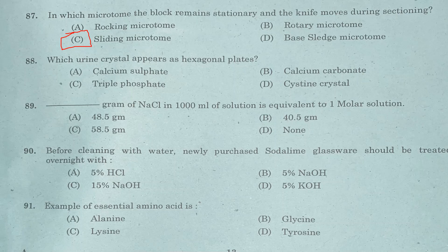Question 88: Which urine crystal appears as hexagonal plates? Option A: calcium sulfate. Option B: calcium carbonate. Option C: triple phosphate. Option D: cystine crystal. Answer is Option D, cystine crystal.